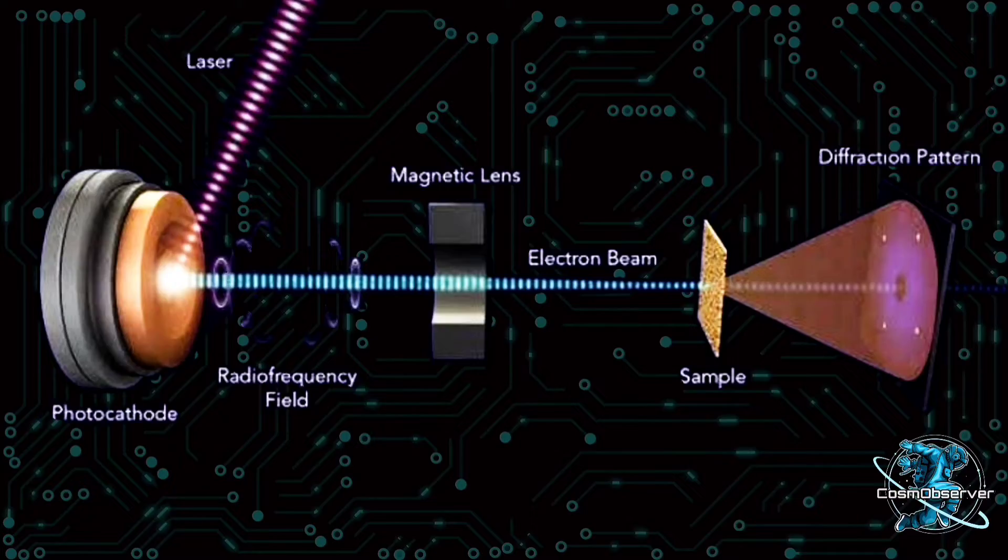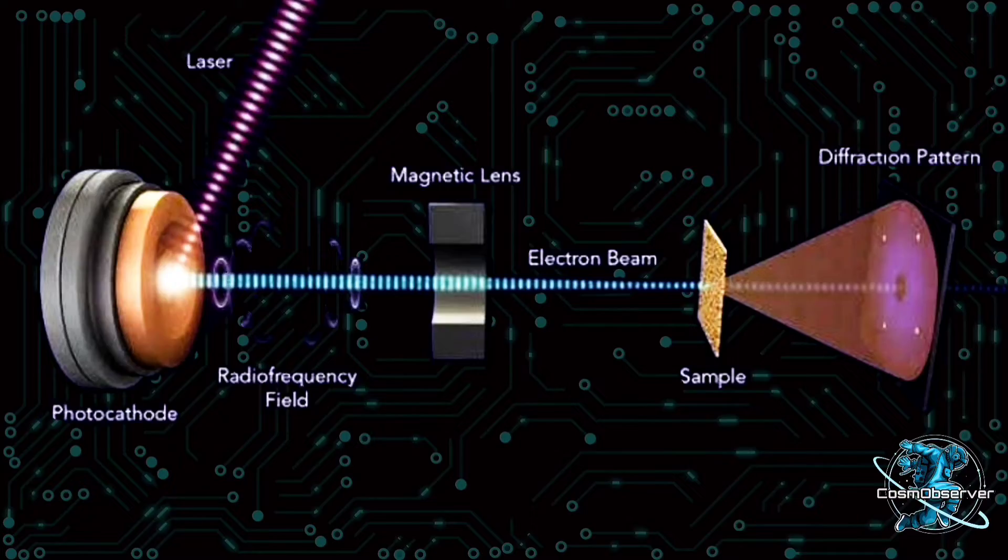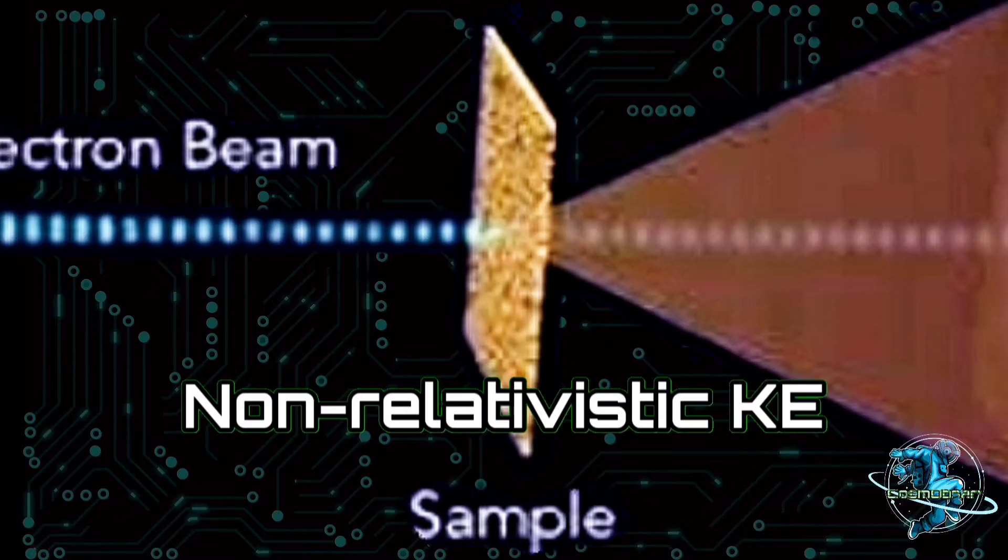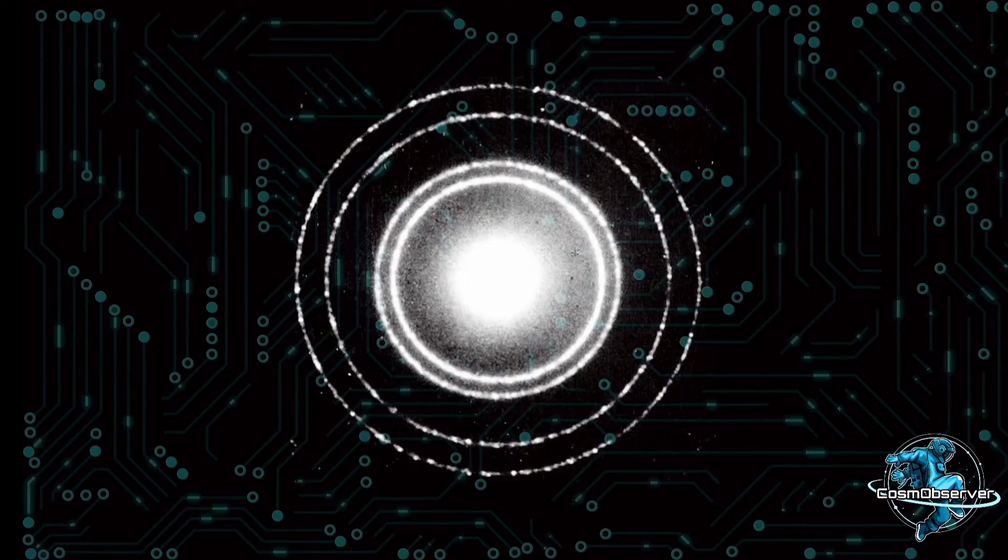Basically in the experiment, an accelerated beam of electrons having non-relativistic kinetic energy strikes the crystal, and the scattered beam is photographed. The pattern of diffraction that appears on the screen gives strong evidence of the wave nature of an electron.